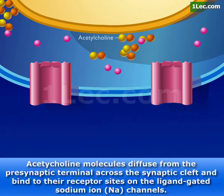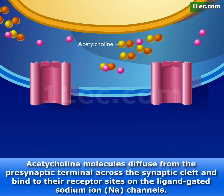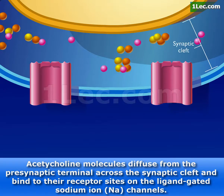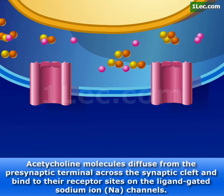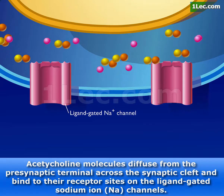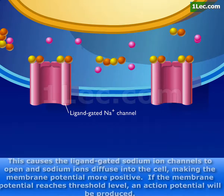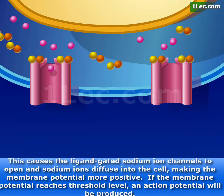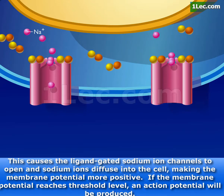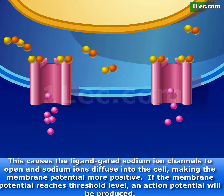Acetylcholine molecules diffuse from the presynaptic terminal across the synaptic cleft and bind to their receptor sites on the ligand-gated sodium ion channels. This causes the ligand-gated sodium ion channels to open and sodium ions diffuse into the cell, making the membrane potential more positive.